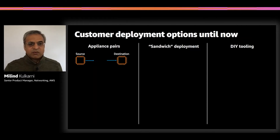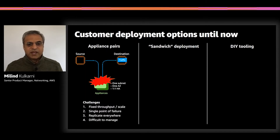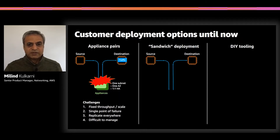Either they deploy appliances in pairs, or they deploy them in what is colloquially called a sandwich deployment, or they build software and tools using do-it-yourself methods. If they deploy appliance pairs, they typically face challenges because this deployment is usually fixed throughput, fixed scale. It is a single point of failure, they have to replicate appliances everywhere, and they're difficult to manage.